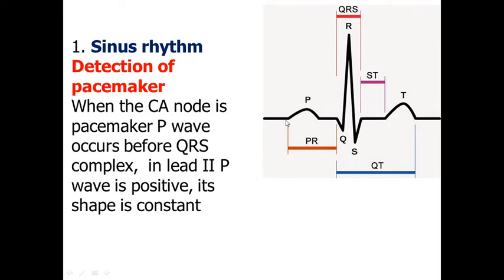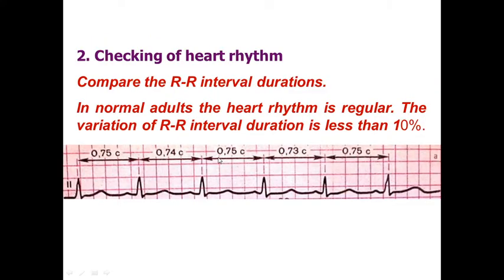Sinus rhythm means the sino-atrial node produces impulses leading to P wave formation, and then QRS formation. If there is no P wave before the QRS complex, it means non-sinus rhythm. You can see the rhythm on our ECG is sinus. Next, you should check the regularity of rhythm. Rhythm may be regular or irregular. Regular rhythm means the RR intervals are the same — the difference between RR intervals is less than 10%. For example, here you see differences between RR intervals are less than 10%, so we have regular rhythm. Sometimes there may be irregular rhythm when the difference is more than 10%.